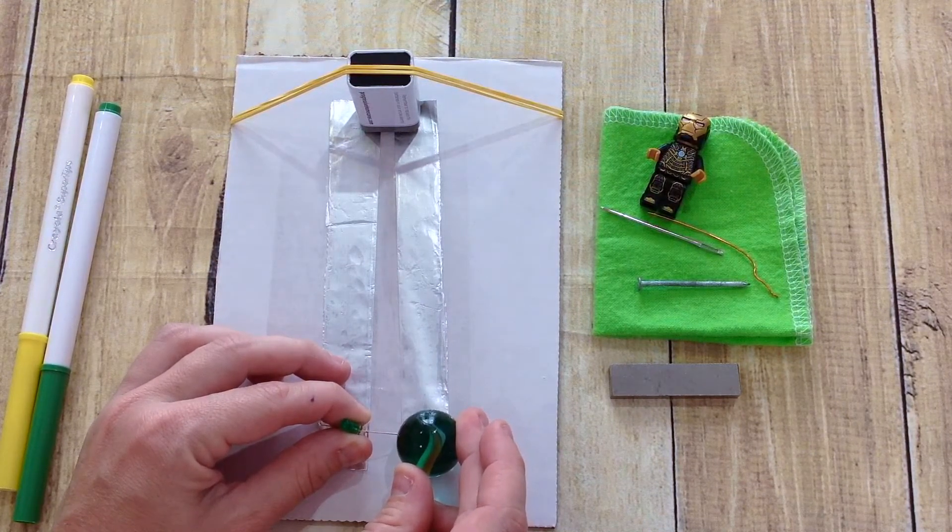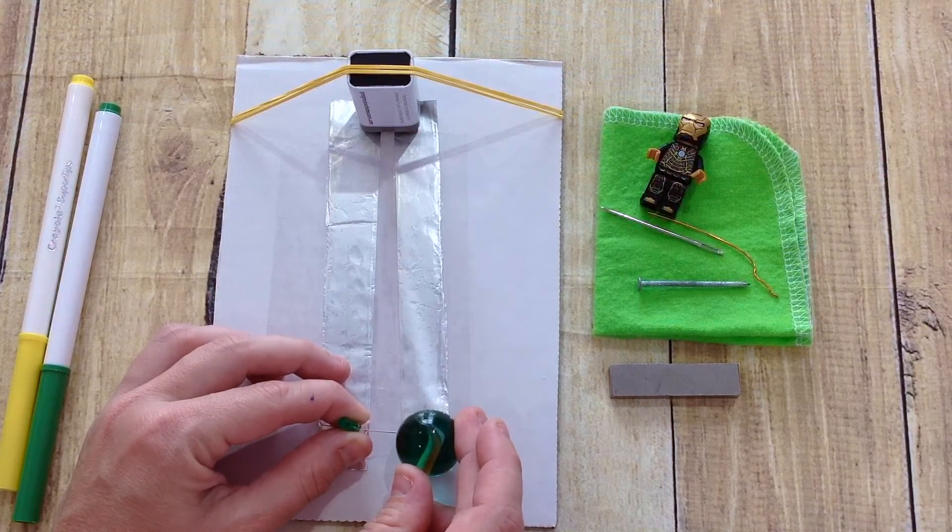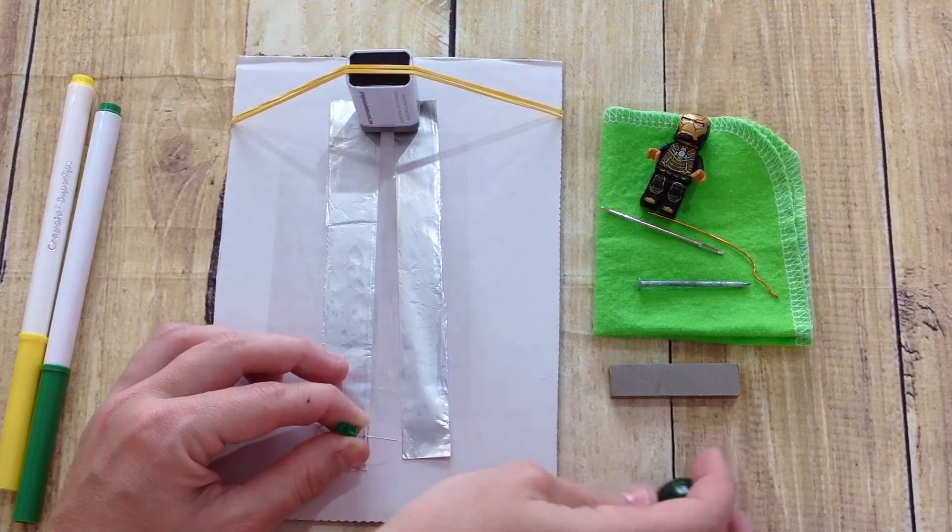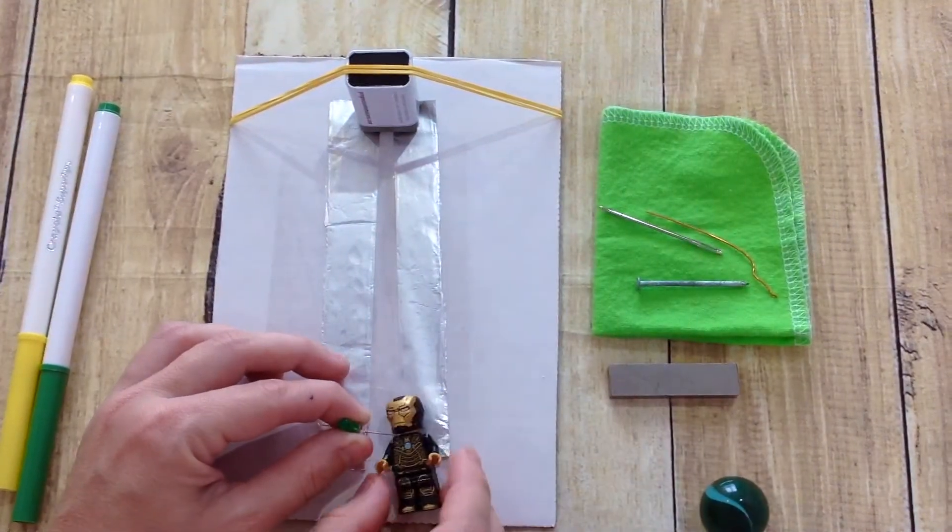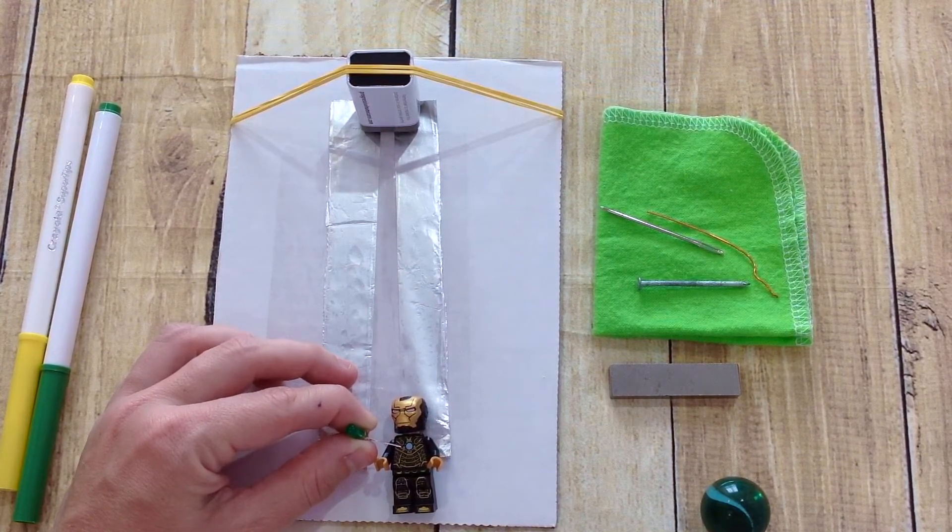The glass marble is an insulator. Don't forget to keep track of your observations by recording them in a notebook. Next up, we have a plastic Lego mini figure. This one is definitely an insulator.